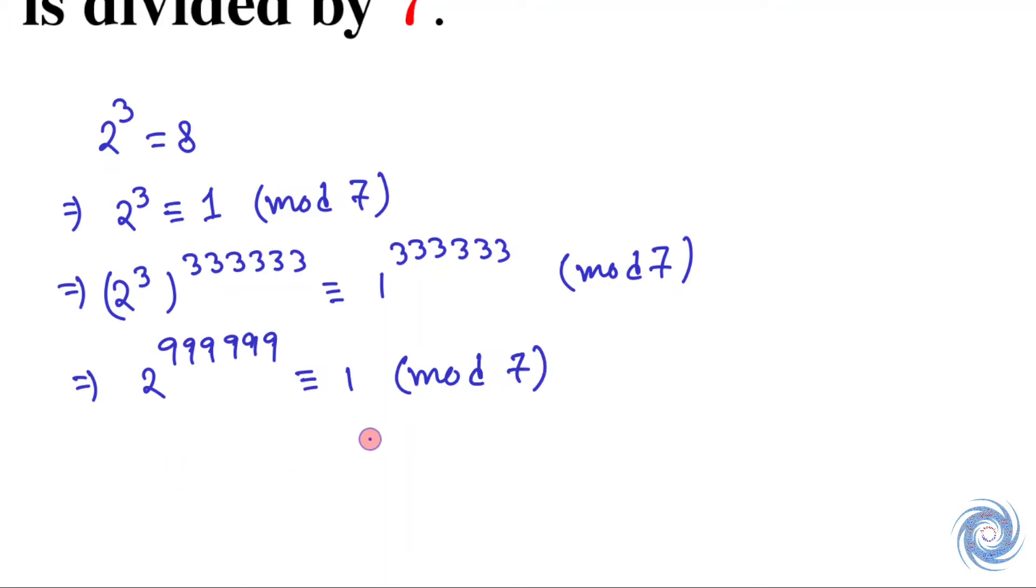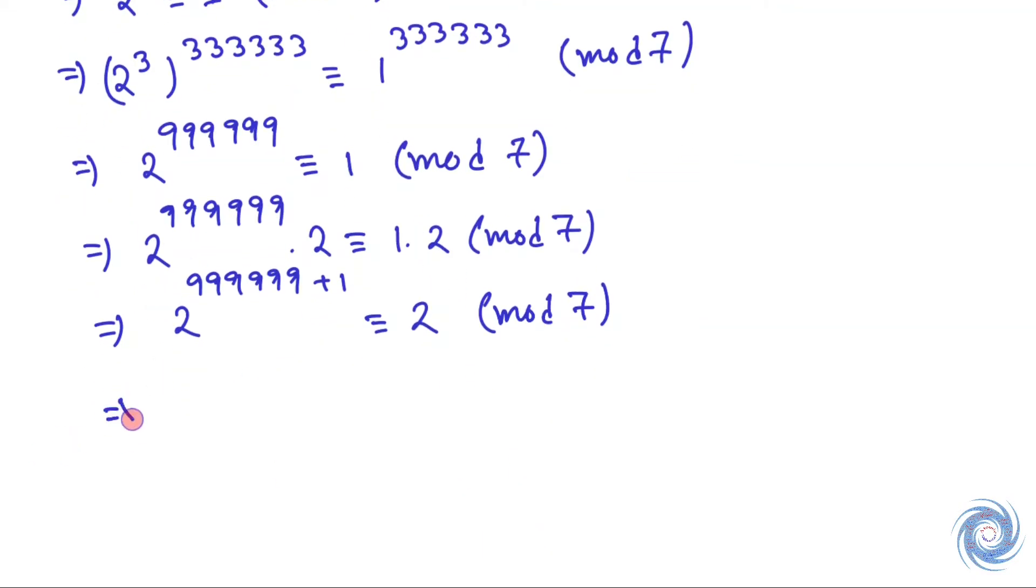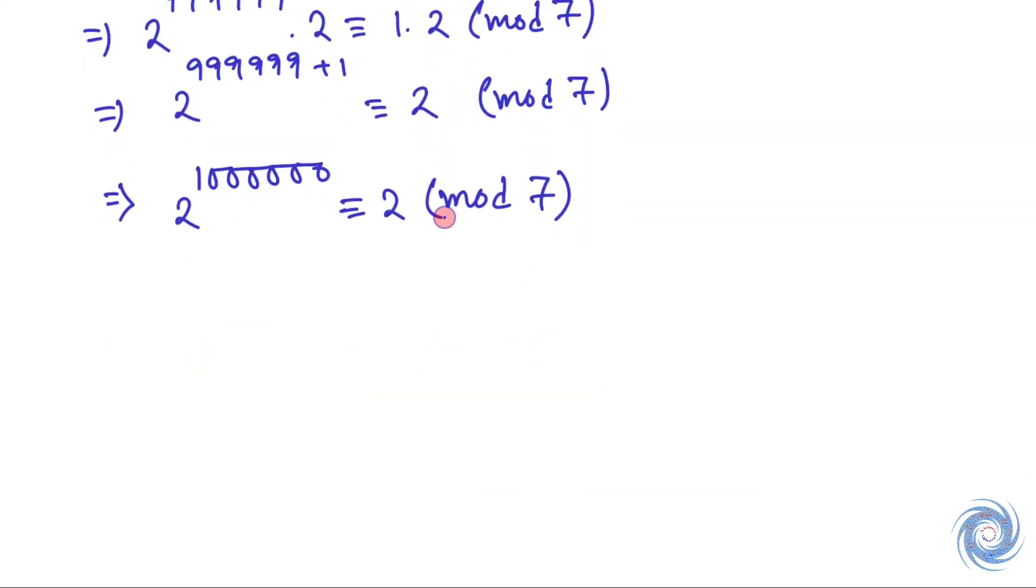Now let us multiply 2 on both sides. This implies 2⁹⁹⁹⁹⁹⁹ is congruent to 1 mod 7. Therefore, 2¹⁰⁰⁰⁰⁰⁰ is congruent to 2 mod 7. So the remainder is 2.